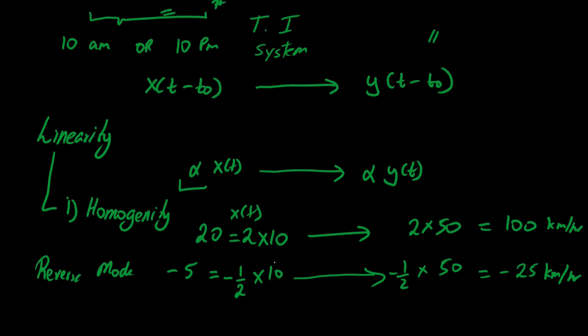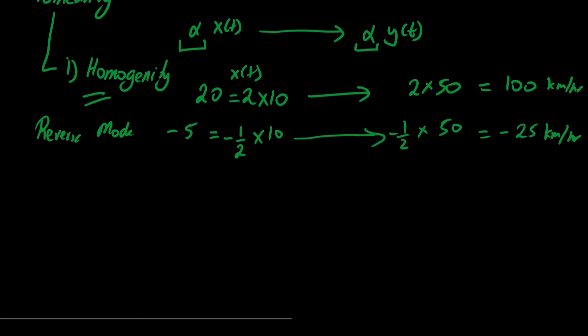Hence our output would be 50 times minus 1/2, and that is minus 25 km per hour. So whichever constant we multiply at the input, that would also multiply with the output, that is y(t). Now this was the first property.